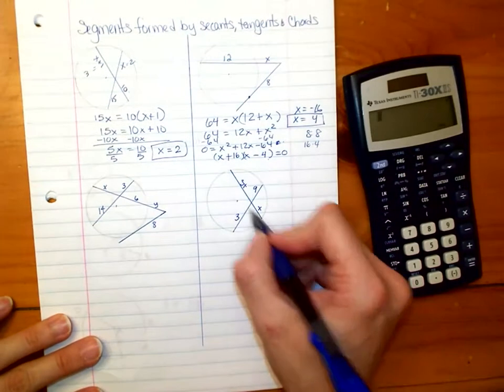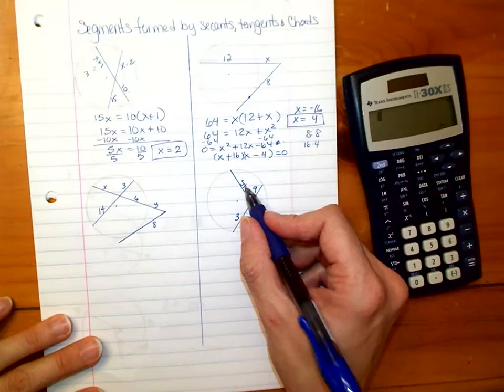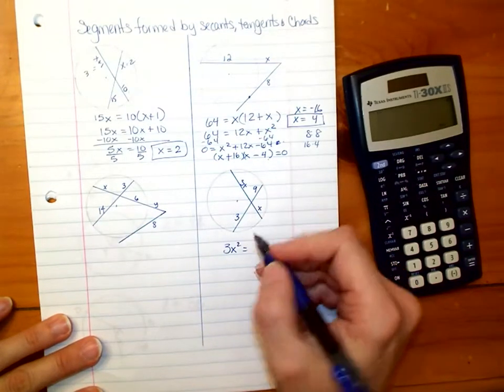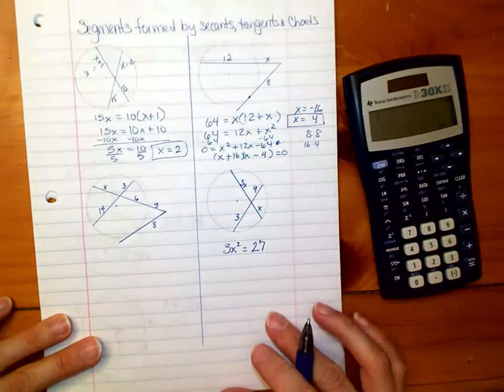Let's go to this one. It's two chords, again, intersecting inside a circle. So 3X times X, which is 3X squared, going to equal 9 times 3, which is 27.